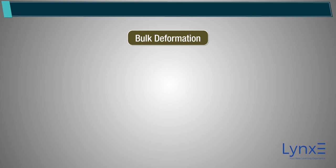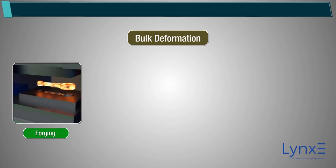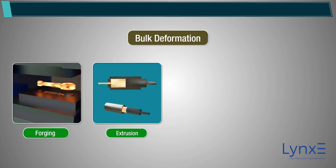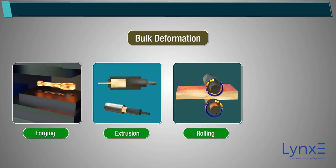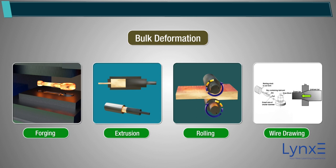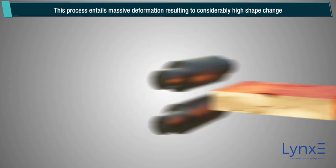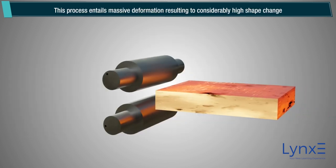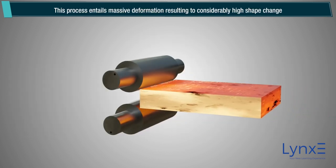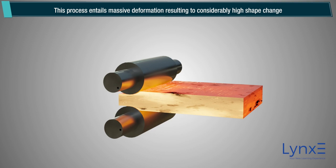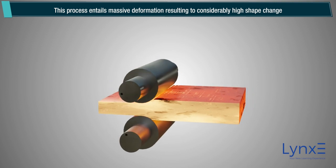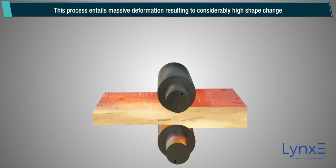Metal forming is generally classified as bulk deformation, such as forging, extrusion, rolling, wire drawing, etc. This process entails massive deformation resulting in considerably high shape change, and is mostly done in hot working conditions.